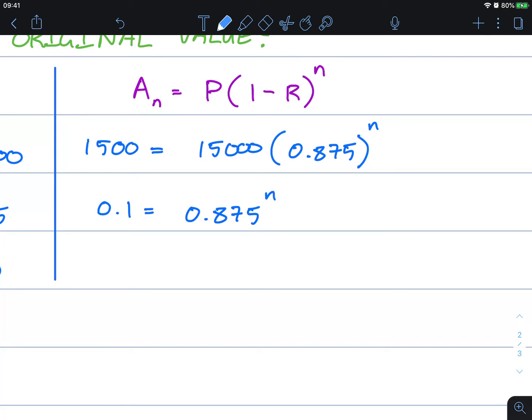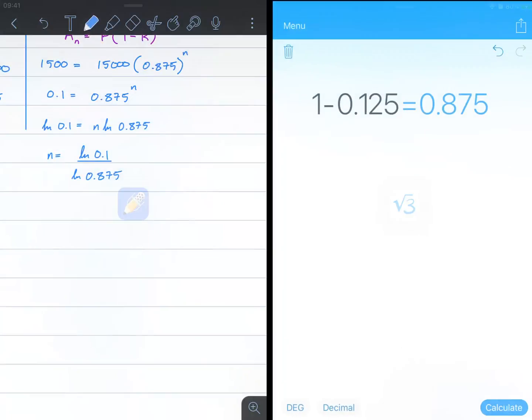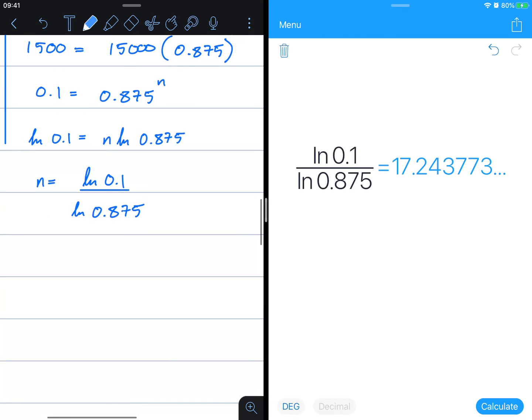We've been here before. Let's do some logarithms. ln of 0.1 equals n ln 0.875. n is equal to the natural log 0.1 over the natural log 0.875. ln 0.1 over ln 0.875, that's giving us 17.2437 years.